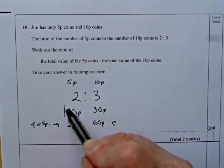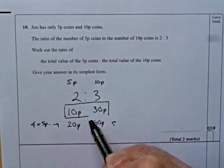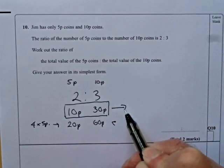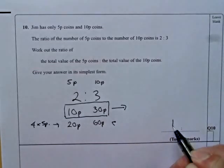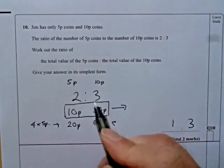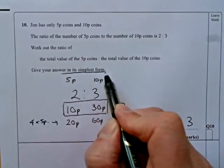So the best thing really was to keep the numbers small and use that one there. And 10 to 30 means they're in the ratio, the value is in the ratio 1 to 3. It says give it in its simplest form.